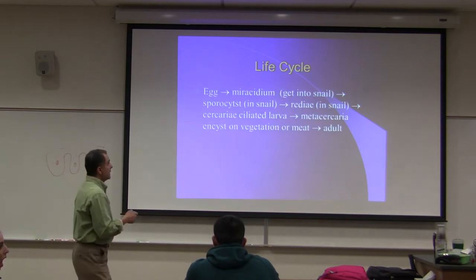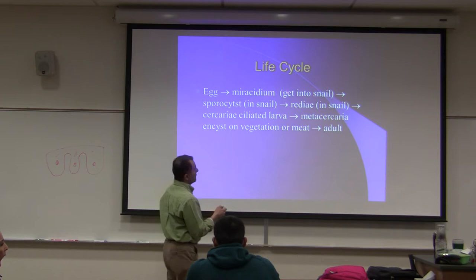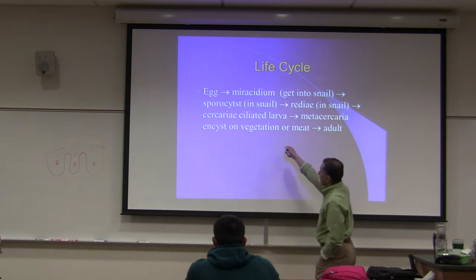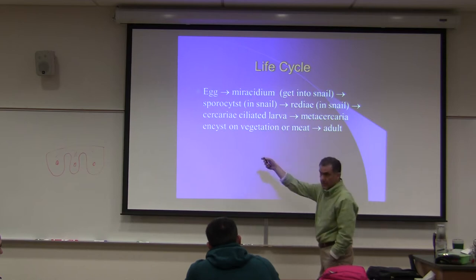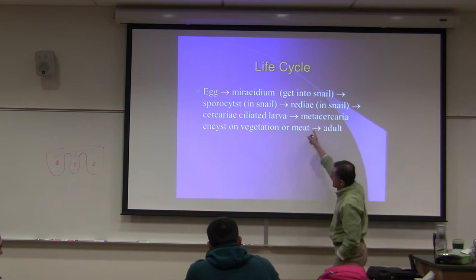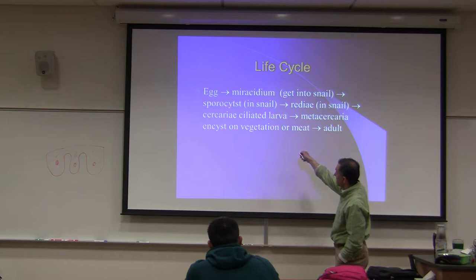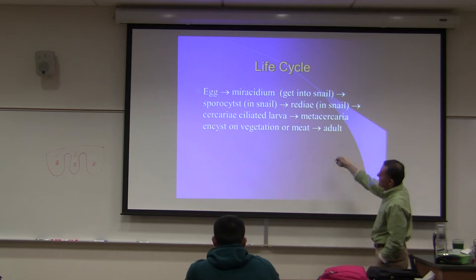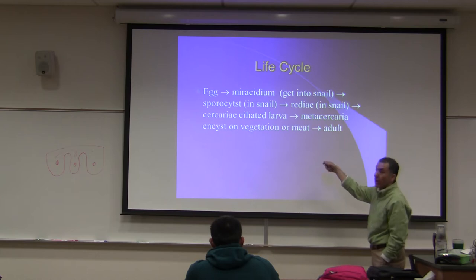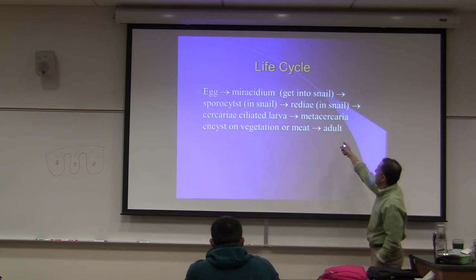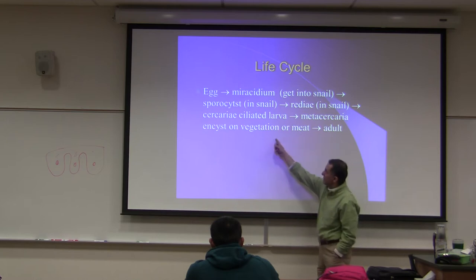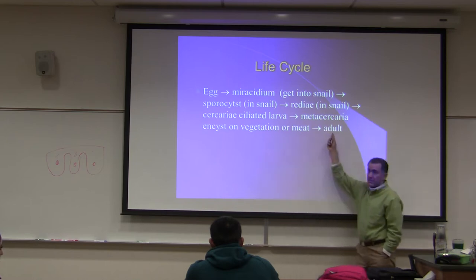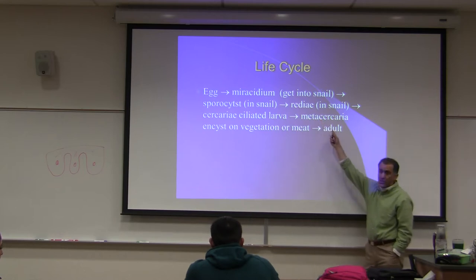The life cycle is like this: eggs are released and become miracidium. Miracidium has cilia, finds a snail - usually an aquatic snail. Inside the snail, sporocysts develop. Inside sporocysts you have redia. Inside redia you have cercaria. Cercaria gets out of the snail and either becomes metacercaria and encysts on vegetation, or some species skip the metacercaria stage.